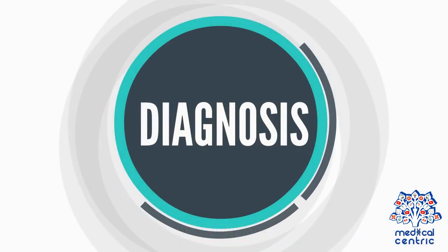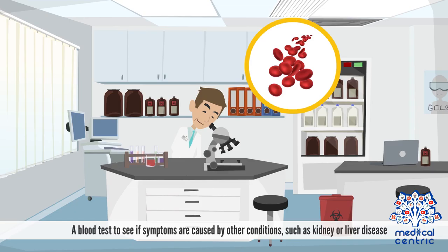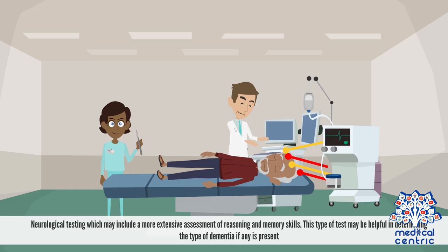Diagnosis and Treatment. No single test is available to identify the condition, so medical professionals try to identify certain characteristics and features while excluding other possible causes. It is always difficult to make a diagnosis at the early stage, because symptoms often overlap with those of other conditions. A blood test may be done to see if symptoms are caused by other conditions such as kidney or liver disease. Neurological testing may include a more extensive assessment of reasoning and memory skills, which may help determine the type of dementia, if any is present.